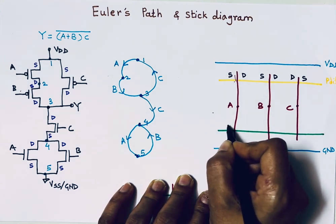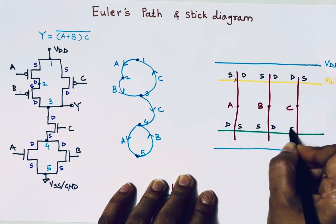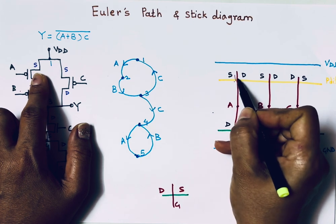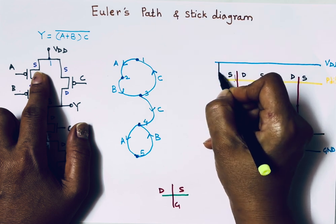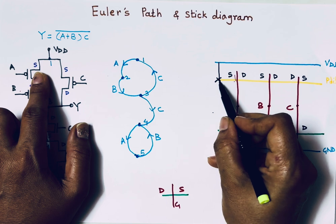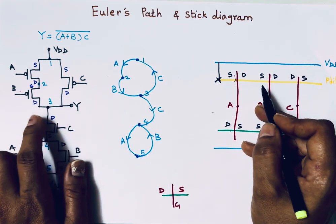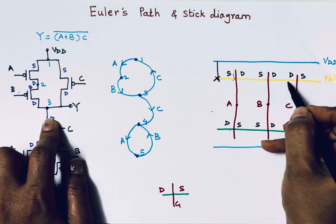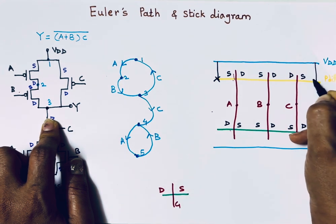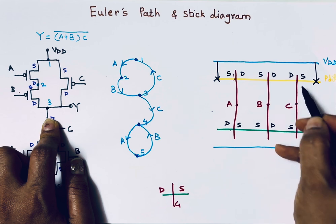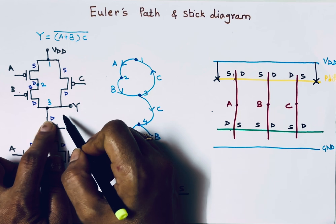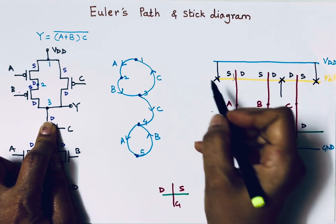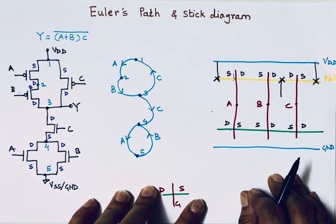The source terminal of PMOS A is connected to VDD. Drain of PMOS B and drain of PMOS C are already connected. Source of PMOS C is connected to VDD. The output is taken from the drain of C and drain of B in the pull-up network. These connections complete the pull-up portion.